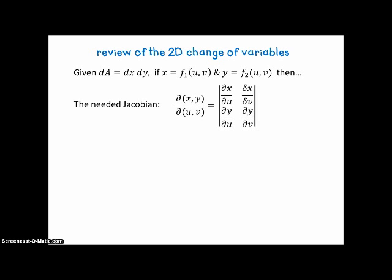Okay, so let's review change of variables in two dimensions. Given dA is dx dy, if x is given as a function of u and v and y is given as a second function of u and v, then the needed Jacobian is as follows. On the left there we have the shorthand notation, and on the right is how we evaluate the determinant for that Jacobian, where we have the partial derivatives of x across the top and partial derivatives of y across the bottom.